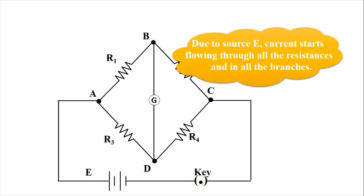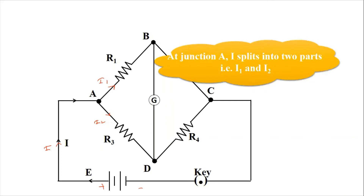Due to the EMF source, current starts flowing through all the resistances. If A is positive and the other terminal is negative, current I flows through the circuit. At point A it is divided into two branches: in branch AB a current I1 is going, and in branch AD current I2 is going. So this current I1 and I2 split up into two branches.